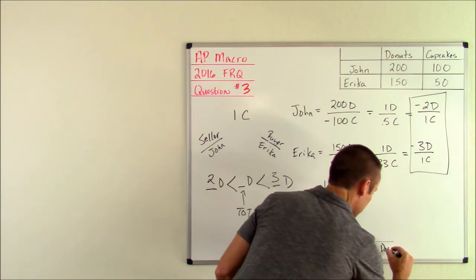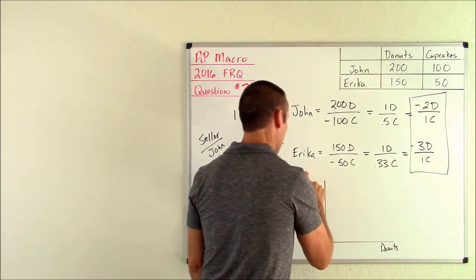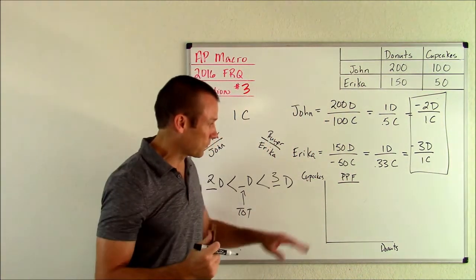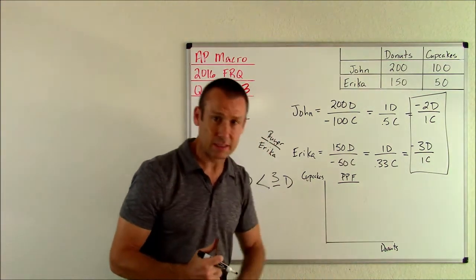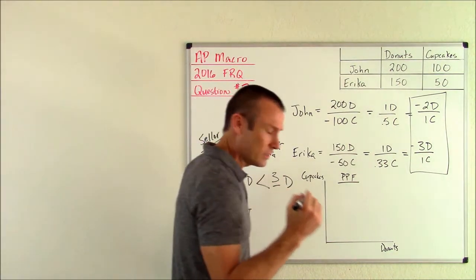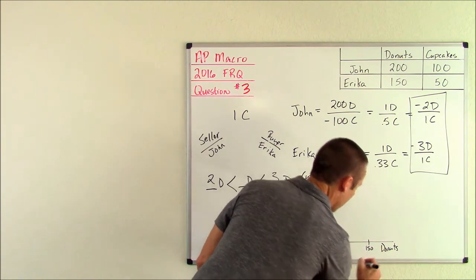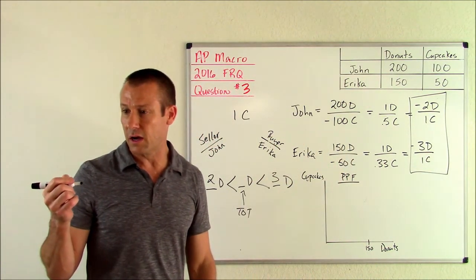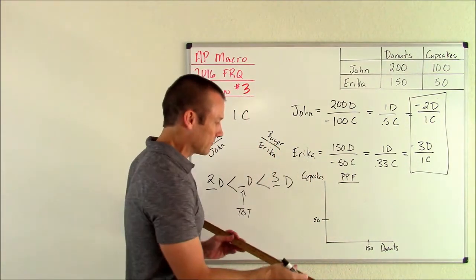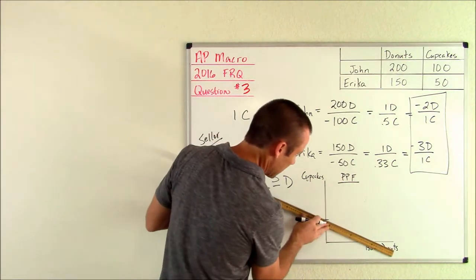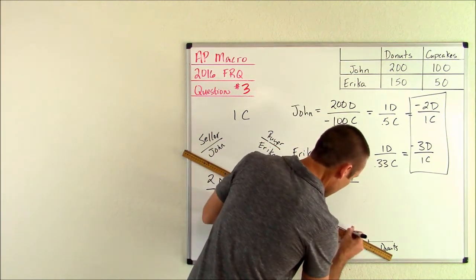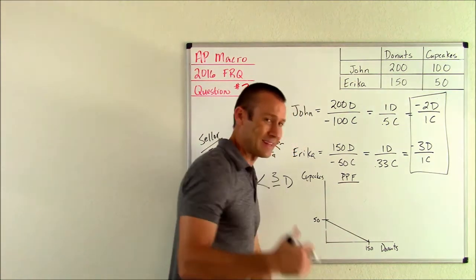We've got donuts down here on the horizontal, so that makes cupcakes go over here. I'm drawing a production possibilities frontier. The production possibilities frontier has production of goods on both axes. What was the original setup? Again, I'm doing this for Erica. It was 150 donuts and it was 50 cupcakes. These two axes actually don't have to be calibrated the same, so it doesn't really matter where I put those two things. I'm going to draw a line that connects them. My line is going to be linear. 50 and 150, that's the original PPF.